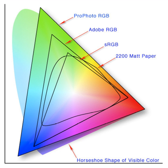One part of the definition of an absolute color space is the viewing conditions. The same color, viewed under different natural or artificial lighting conditions, will look different. Those involved professionally with color matching may use viewing rooms lit by standardized lighting.